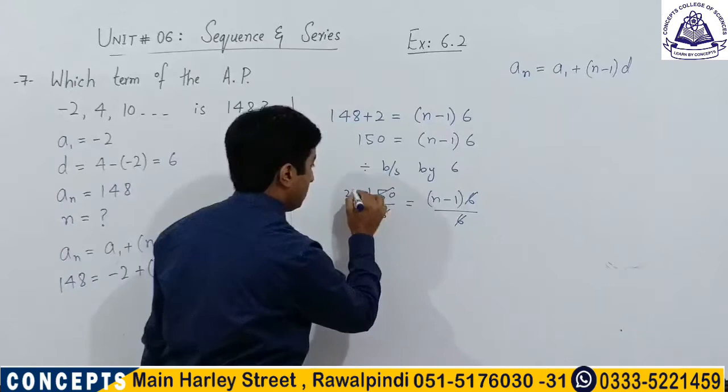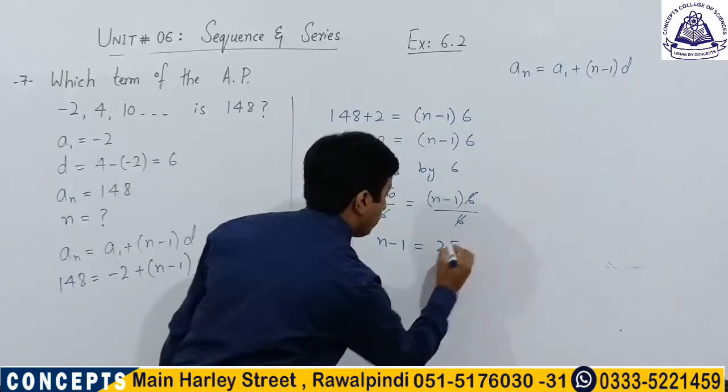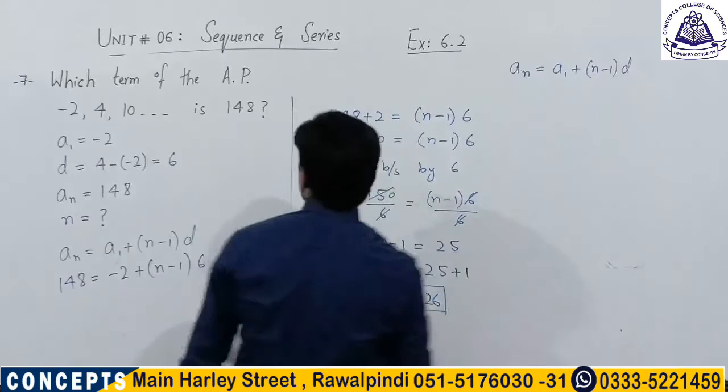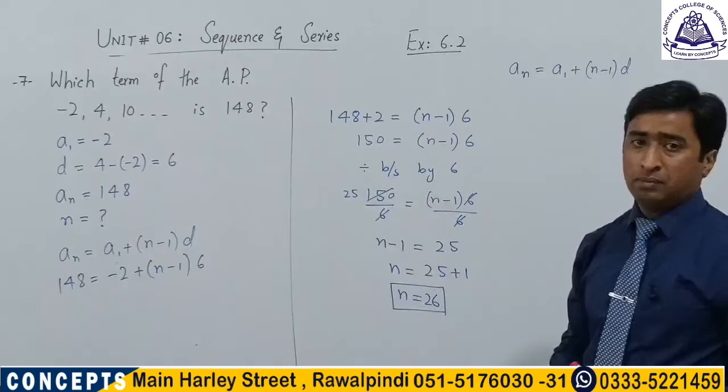Therefore n − 1 = 25, so n = 26. Thus 148 is the 26th term of this sequence.